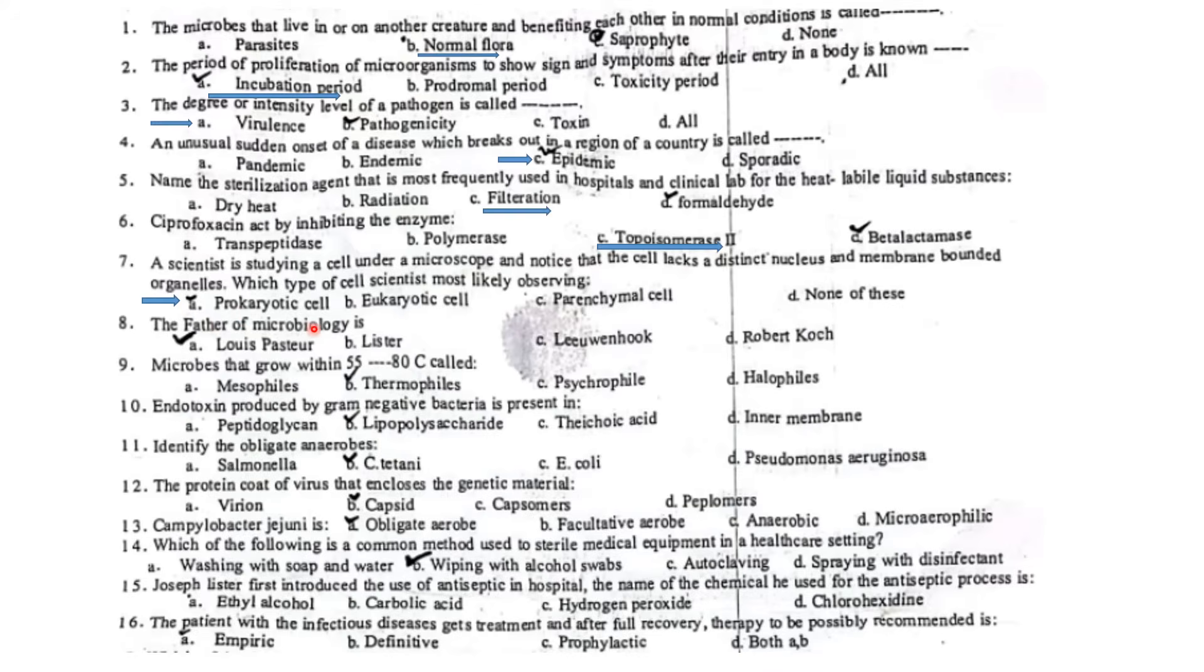The father of microbiology is Leeuwenhoek, not Pasteur. Microbes that grow within 55 to 80 degrees are called thermophiles. Endotoxin produced by gram-negative bacteria is present in the lipopolysaccharide.